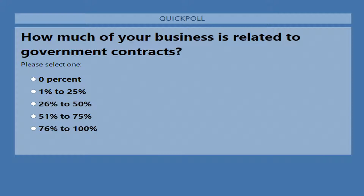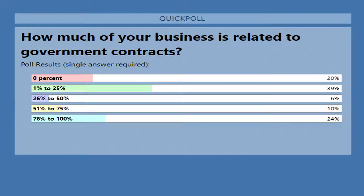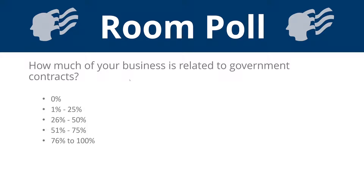The first poll question was: how much of your business is related to government contracts? We've got a fair amount saying it's a small percentage, and about 24% saying a significant portion of their business. There's a bit of a gap in the middle — it's either on the low side or on the high side. Part of the reason I ask these questions is to get a sense of who's on the other end of the line.